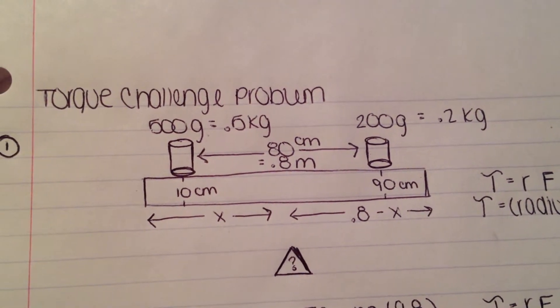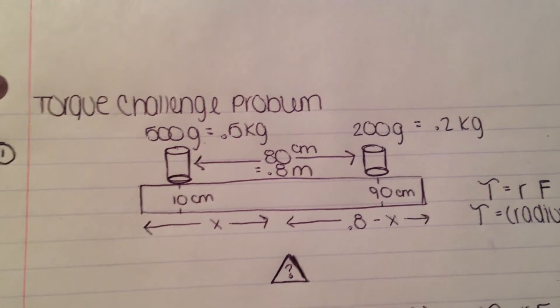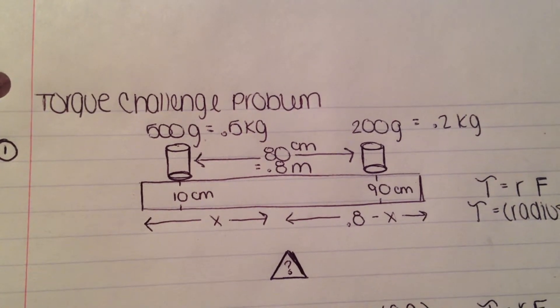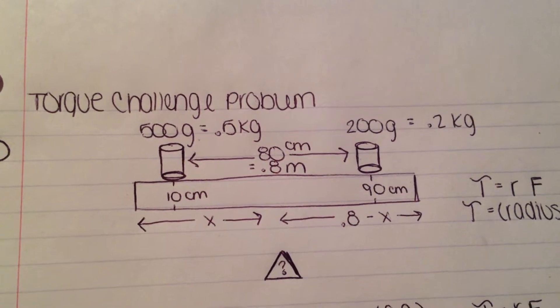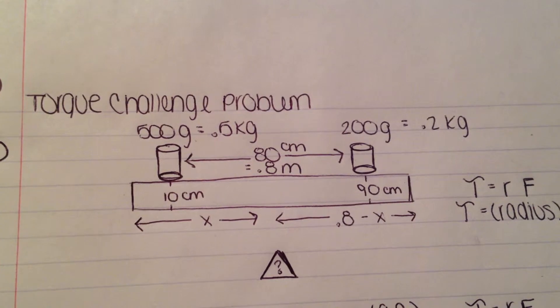Alright, so since the main thing for this problem is to find where to put the support to balance the meter stick, you're basically trying to find the radius from each of the weights to the center support. Since it's our job to find the radius, we need to use variables as a substitute in order to solve the problem.